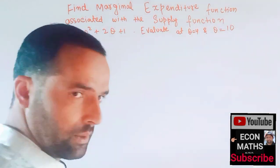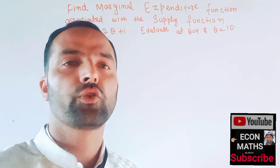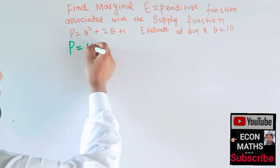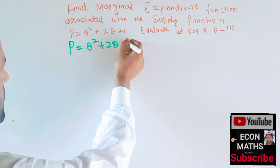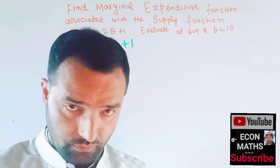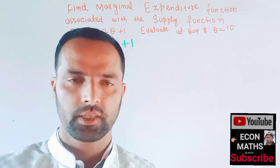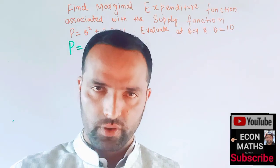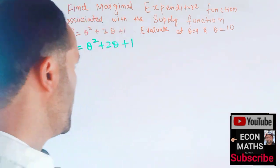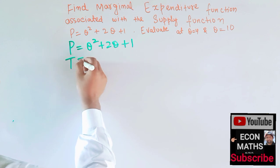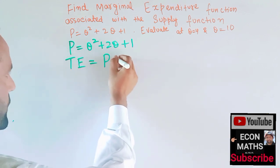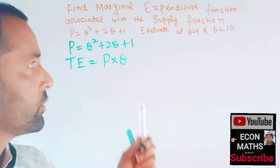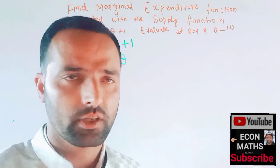How do we solve this type of question? We are given the supply function and we have to find out the marginal expenditure function. The total expenditure function is equal to price multiplied by output. So we multiply the supply function by q to get the total expenditure function.